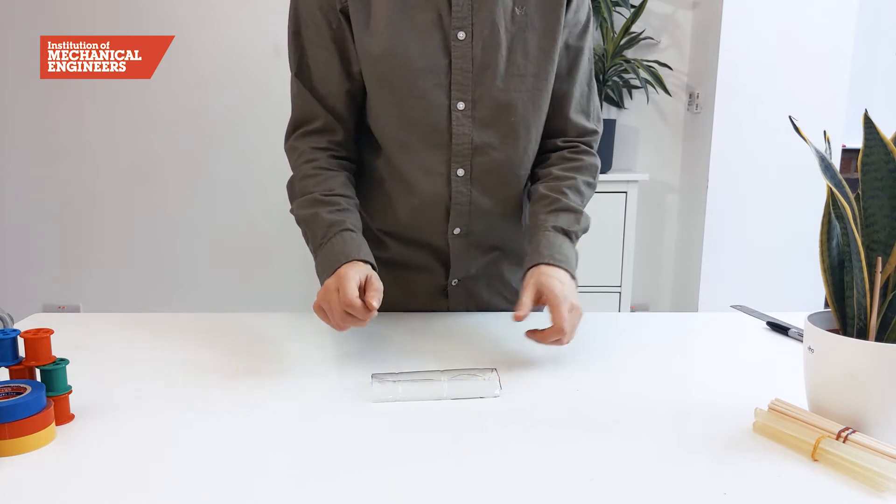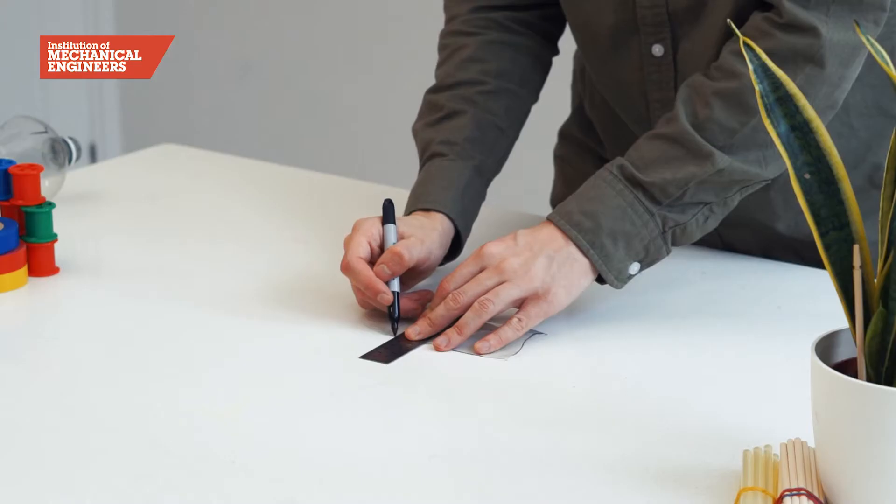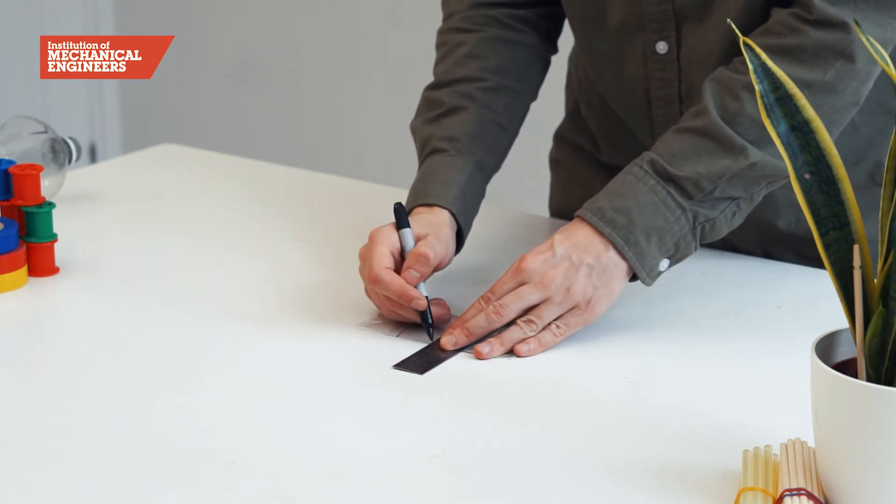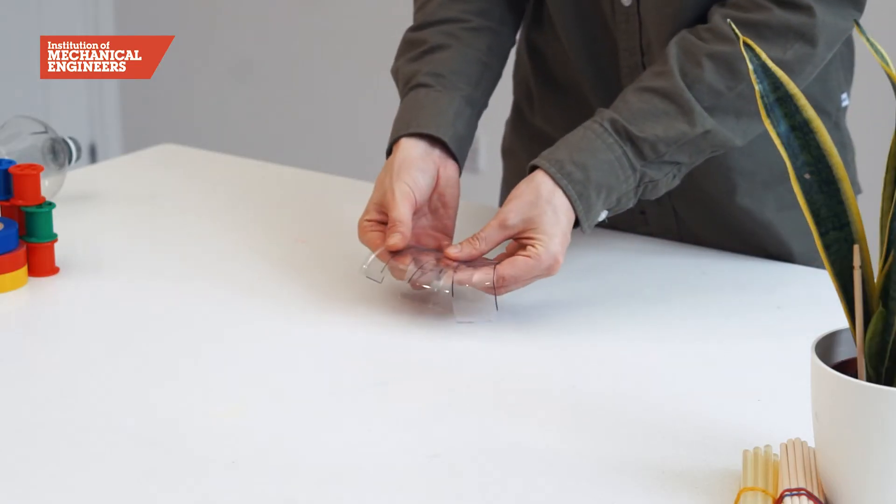Now it's time to start constructing your turbine. Begin by taking the larger rectangle you cut from the bottle and use your ruler to measure four smaller rectangles which are 3cm by 3.5cm. These will form the turbine blades.